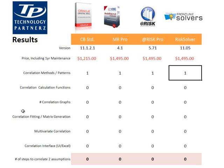And of course, we are going to look at how many steps — and I do say steps and not clicks — that it takes to correlate two assumptions with each one of these packages, including the calculations required to generate the numbers, such as Spearman's rank order coefficient. If you have any questions, please give us a call or drop me an email at etorkia — that's E-T-O-R-K-I-A — at technologypartners, with a Z, dot com.